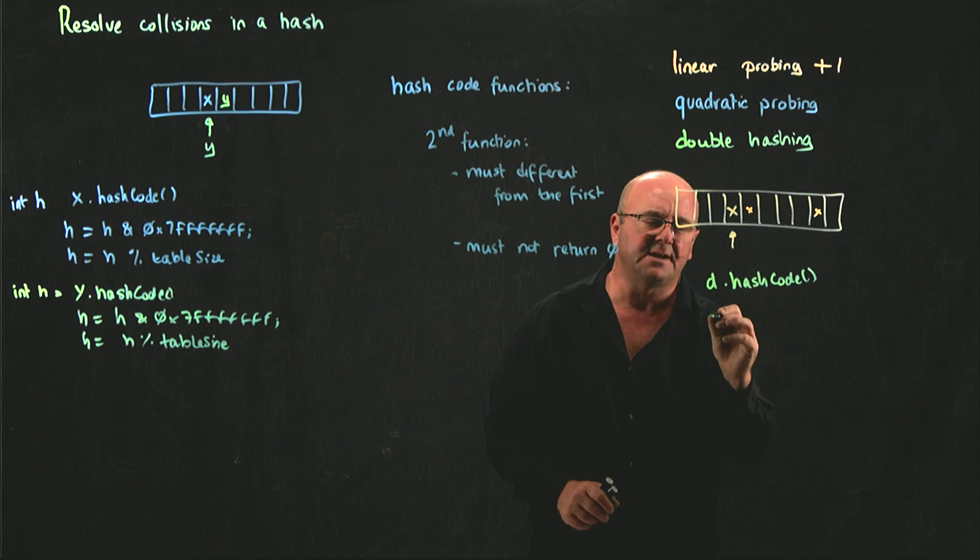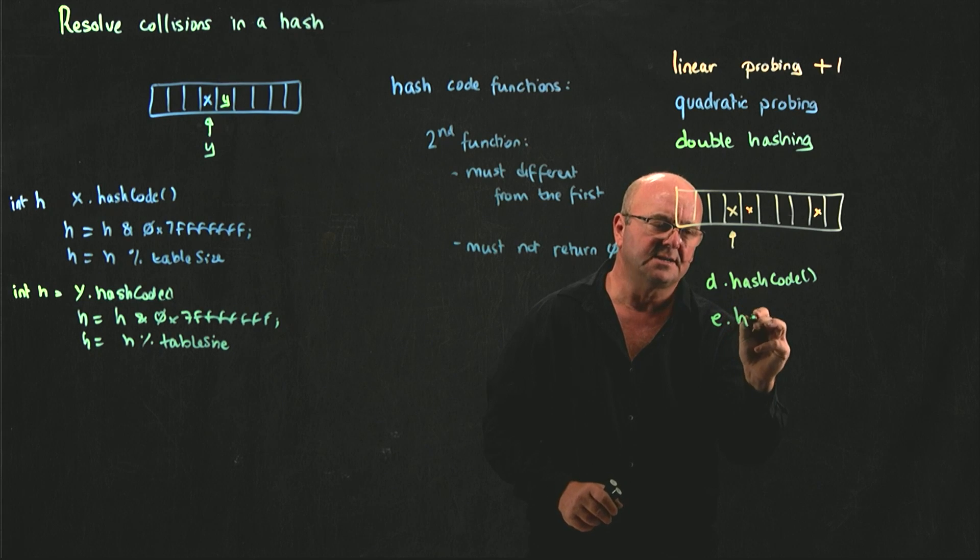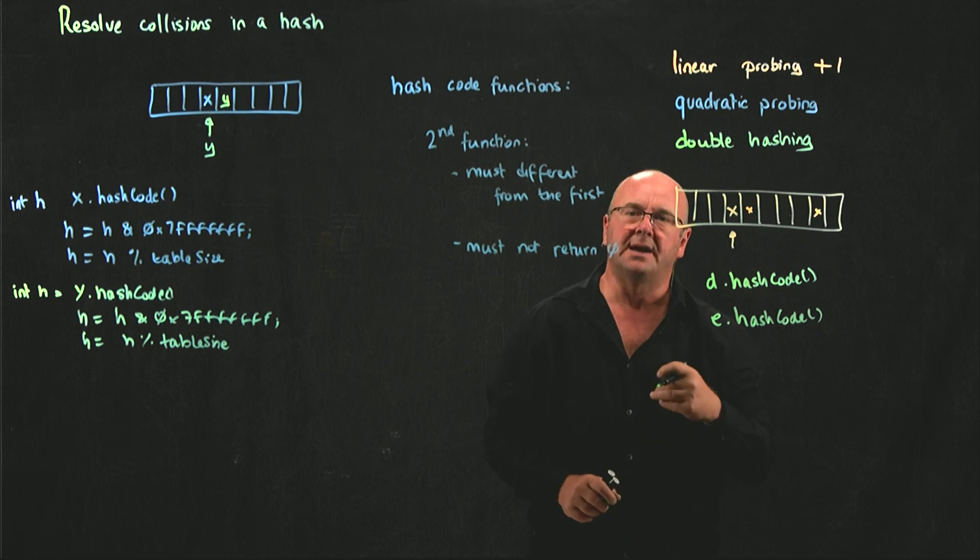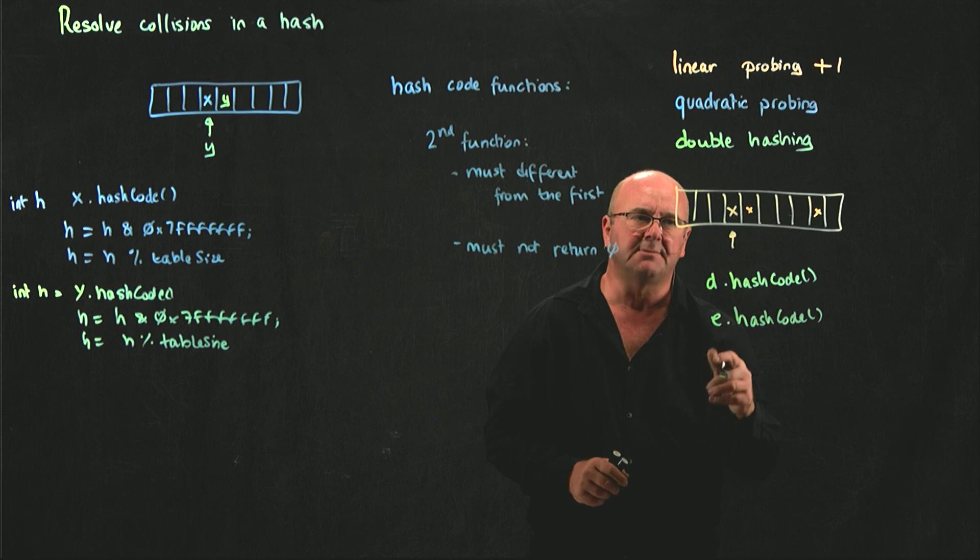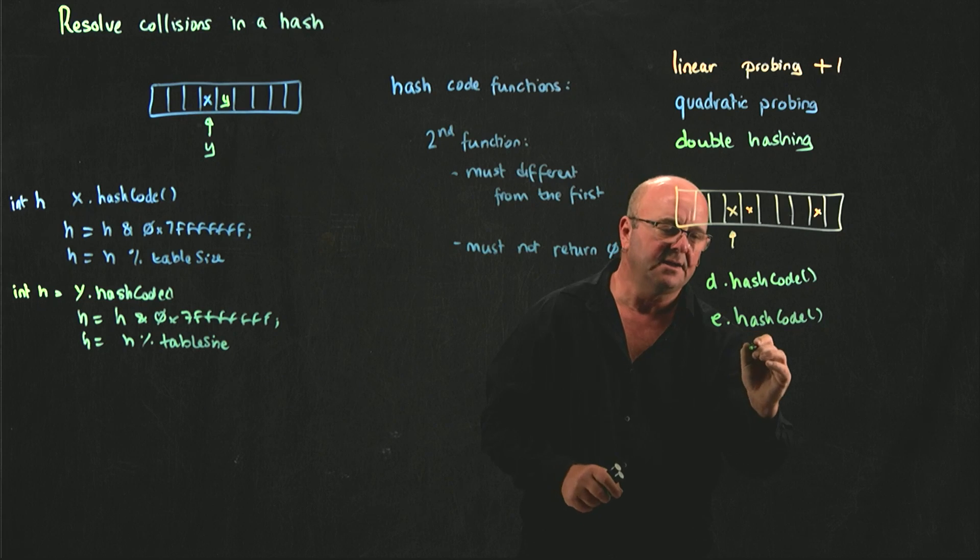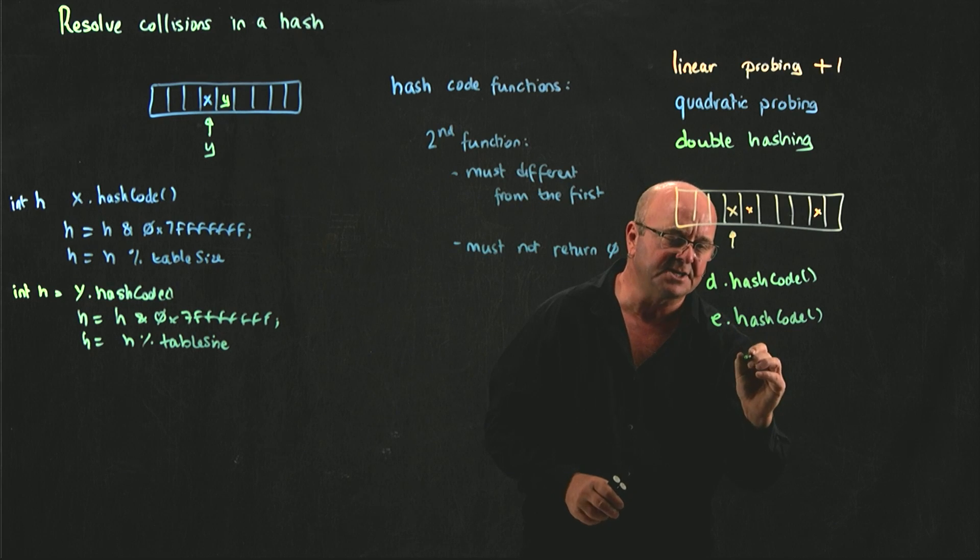The next piece of data, we call hash code, we get our value, we make it positive, we mod it on the table size, and if we go to the cell and the cell is full, then we call our second hash code function.